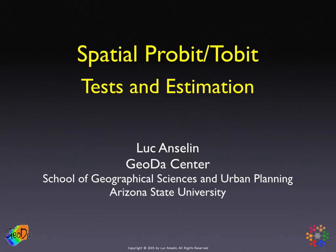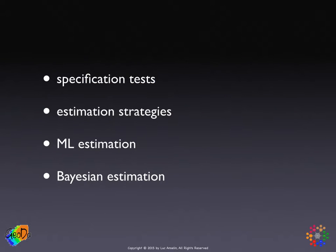In this third section, we're going to look more closely at some specification tests for the presence of spatial effects in probit and Tobit models, and then the actual estimation. We'll first talk about the specification tests, primarily Lagrange multiplier tests, then a general discussion of estimation strategies and a review of different approaches, and then two more technical discussions of maximum likelihood estimation and Bayesian estimation. These are very technical with a lot of notation, and I'll give you in a nutshell what it means.